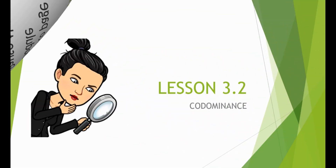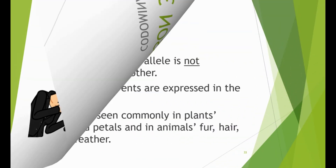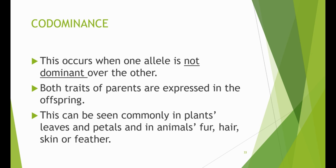Lesson 3.2: Co-Dominance. Co-dominance occurs when one allele is not dominant over the other and both traits are expressed in the offspring. This can be seen commonly in plants' leaves and petals, and in animals' fur, hair, skin, or feathers.